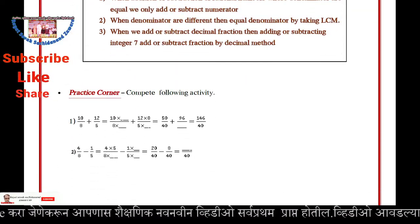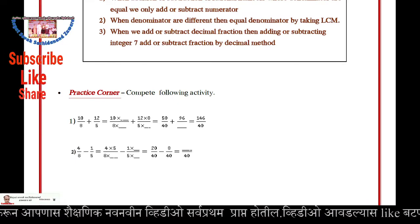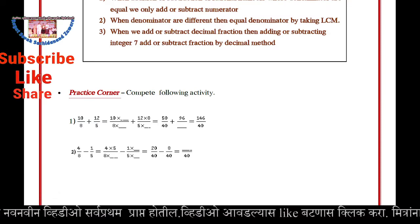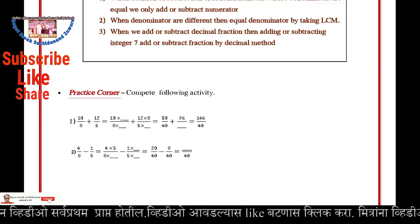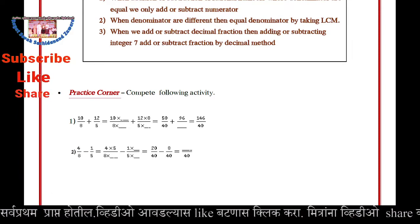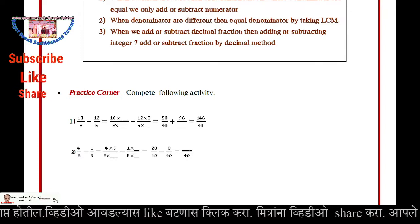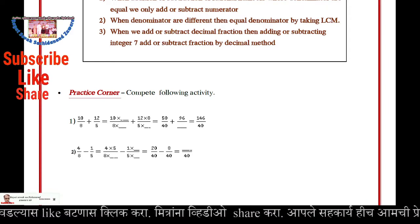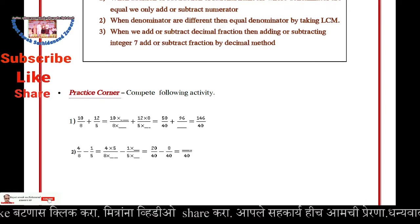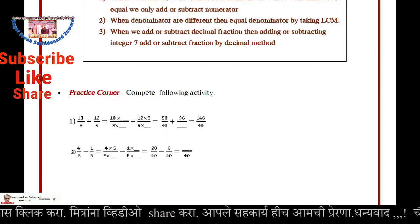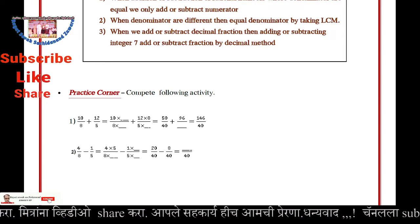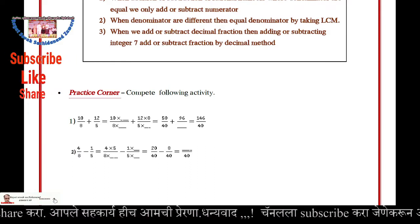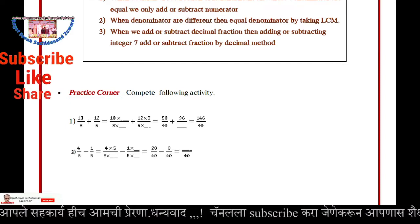Practice Corner: Complete the following activity. 10/8 plus 12/5 equals (10×5)/(8×5) plus (12×8)/(5×8). 10×5 is 50, 8×5 is 40, 12×8 is 96, 5×8 is 40. Denominator is 40 for both, so we write denominator 40. 50 plus 96 equals 146. Answer: 146/40.